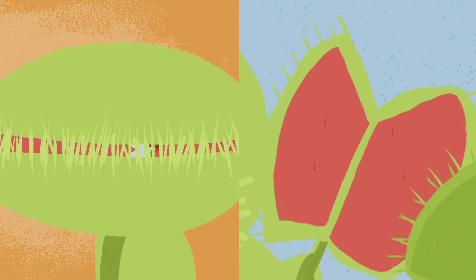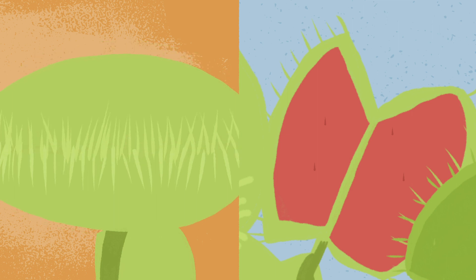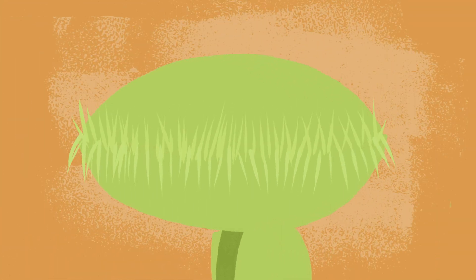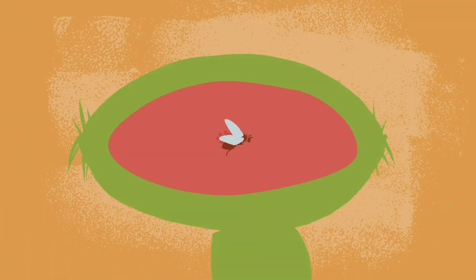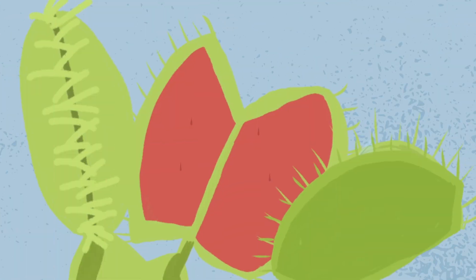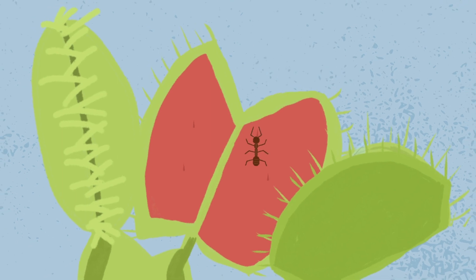Insects that aren't lucky are imprisoned by the teeth-like cilia. From the fifth action potential on, the Venus flytrap starts producing digestive enzymes. So if you feed your Venus flytrap pre-killed prey, the trap may reopen since there is no struggling.